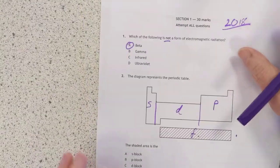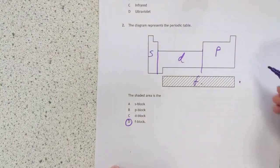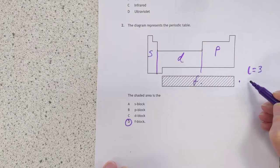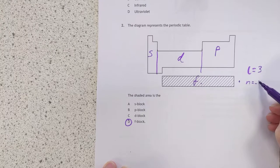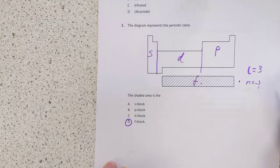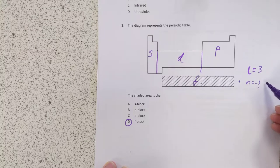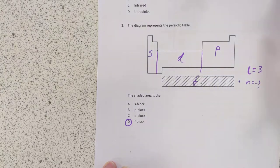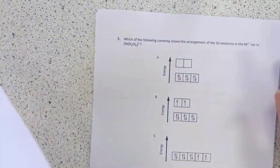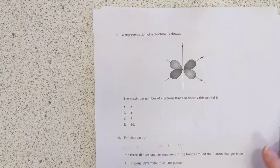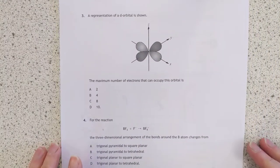Quick reminder, F orbitals are when L equals three, and M equals negative three, negative two, negative one, and up to positive three. That's why there's seven orbitals, each one can hold two electrons, so that's why there's fourteen. I could shamelessly plug my videos on atomic orbitals, but I'm not going to. You've probably seen them already.